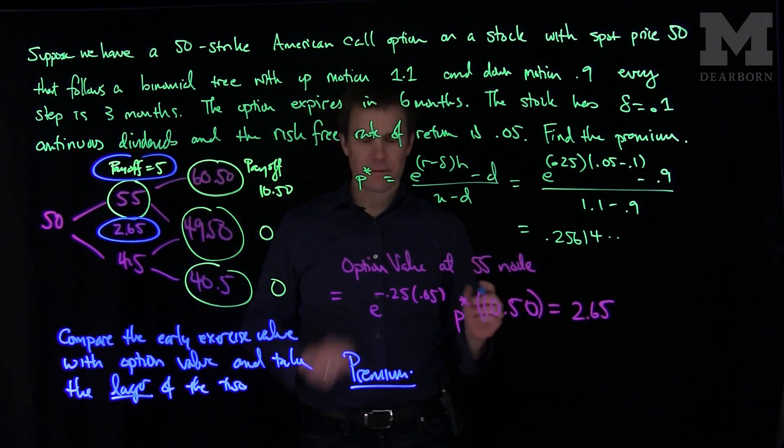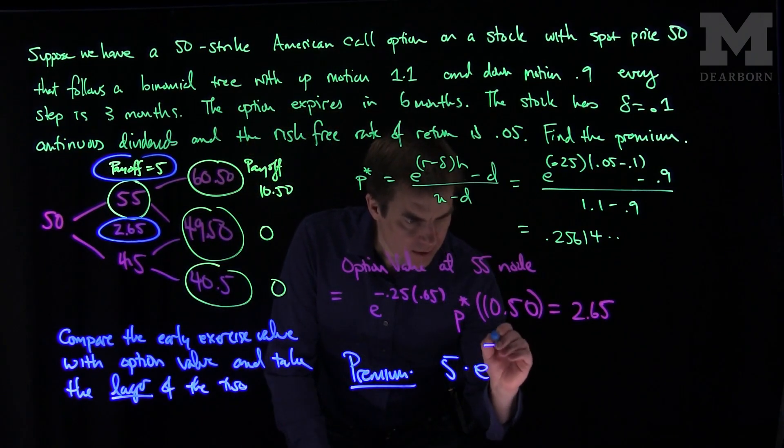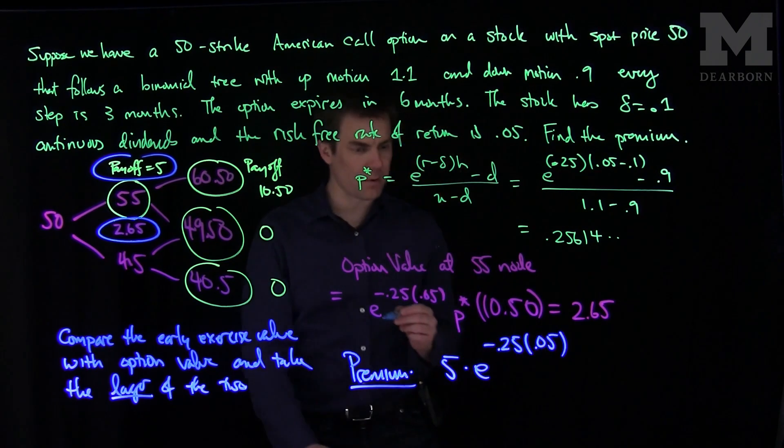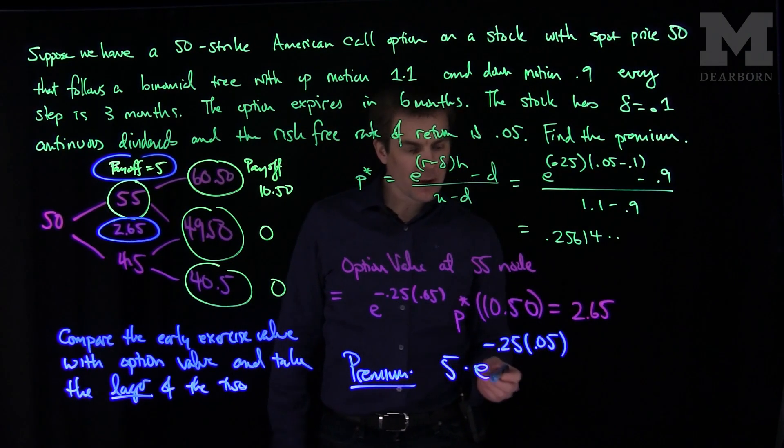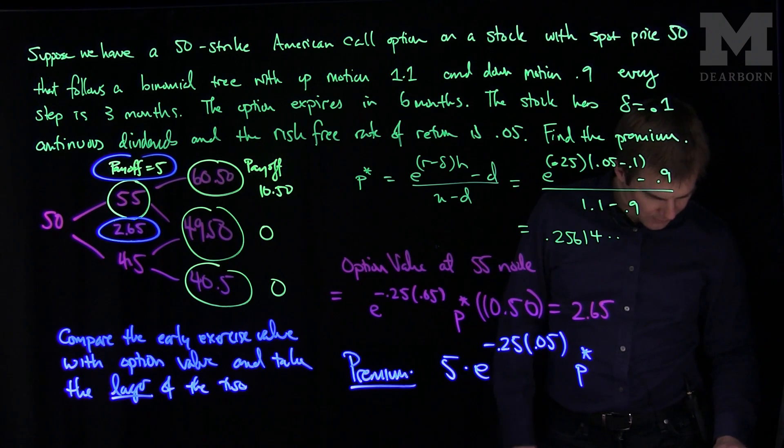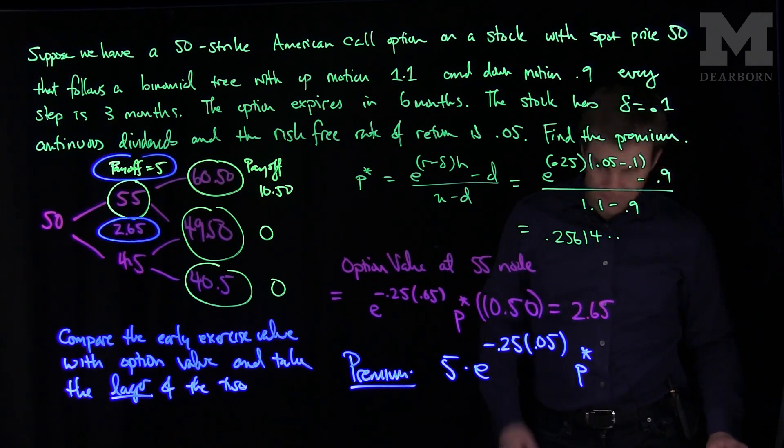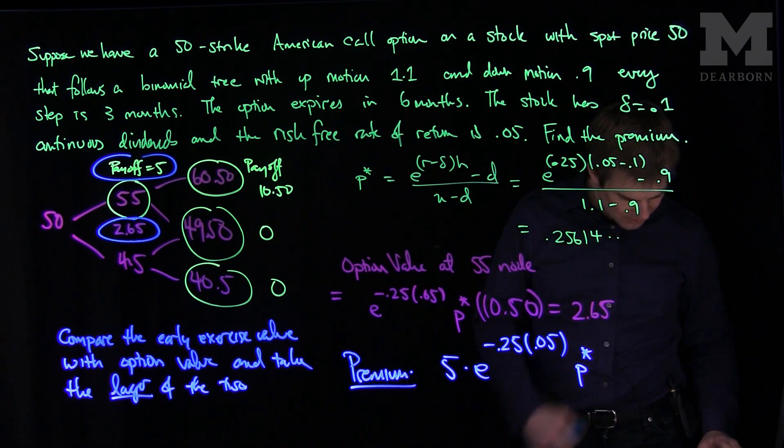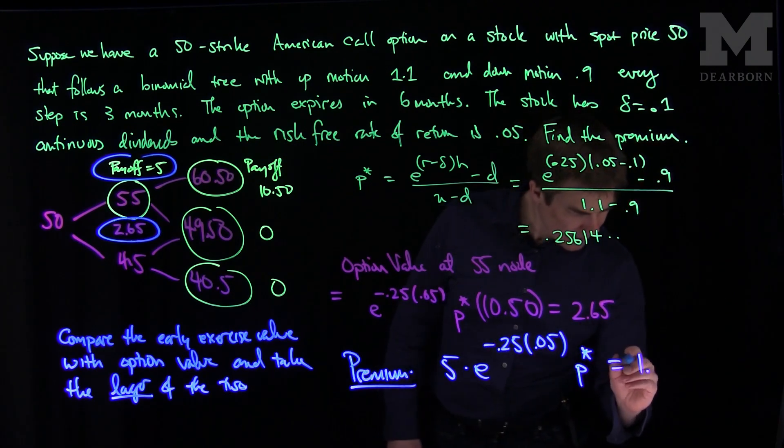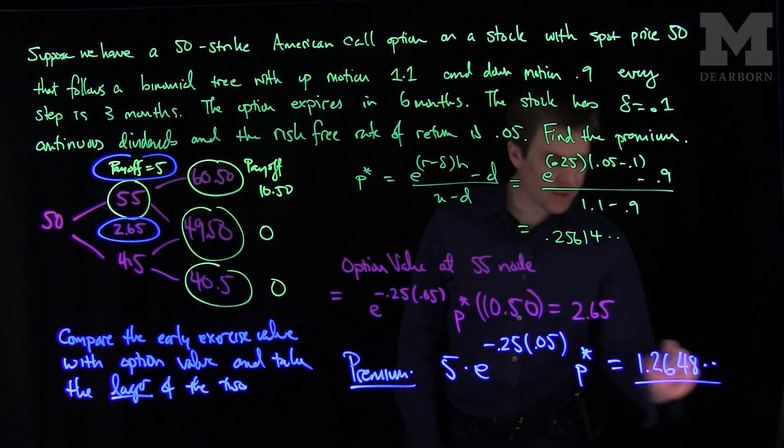The premium of this option: we're going to take the value of 5 from the 55 node, bring it back to time 0. That's going to be e to the minus 0.25, that's my time step, times 0.05, that's the risk-free rate of return, and then the probability that happens, P star. When we put this into the calculator, P star times 5 times e to the negative 0.25 times 0.05, we see that the option premium in total is $1.26.